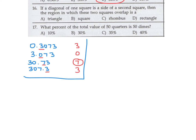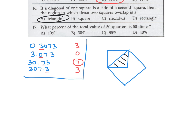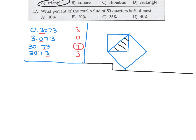The diagonal of one square is the side of a second square — what is the region of overlap? Draw the first square, then the second square oriented with its side being the diagonal of the first. The overlapping region looks like a triangle. Number 16 is A.